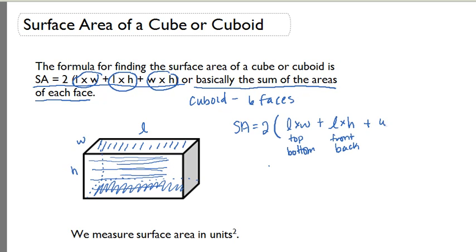Lastly, we have width times height. Width times height is the shorter side of the top times the height, which is basically giving us these areas right here, which are the sides of the cuboid. There are two sides. There's a front and a back, which is two faces, and a top and a bottom, which is two faces. If I add these up, that gives me my six total faces.